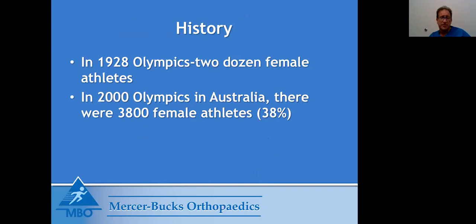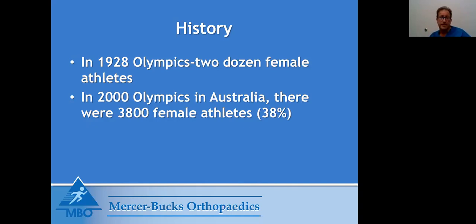Let me introduce myself. My name is Dr. Rick Kleinbart. I'm from Mercer Bucks Orthopedics. I used to be the head of sports medicine down at Hahnemann, and a professor of orthopedics at Drexel when it was still in Philadelphia. Female athletes — a topic that I truly like to talk about. I used to have a female athletic clinic at Hahnemann. Female athletes are a very unique breed, and we're going to talk a little bit about that today.